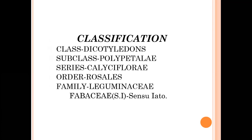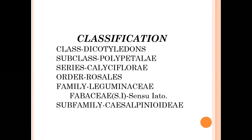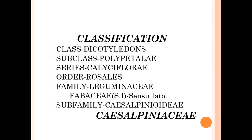The Leguminaceae or Fabaceae family is classified into subfamilies. One of the subfamilies is Caesalpinioideae. In advanced classification, Caesalpinioideae is treated as a separate family, but according to Bentham and Hooker's classification, it is placed under Leguminaceae as the subfamily Caesalpinioideae. Now let's discuss some plants from this family.